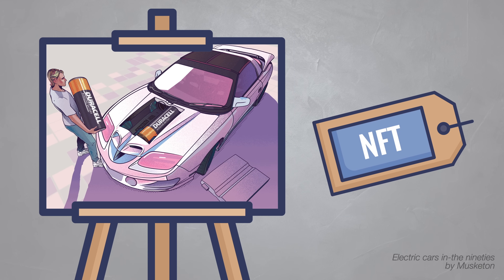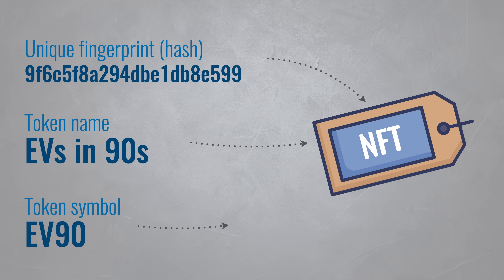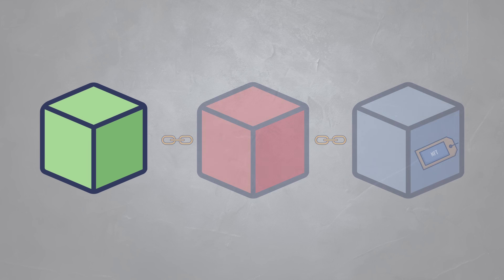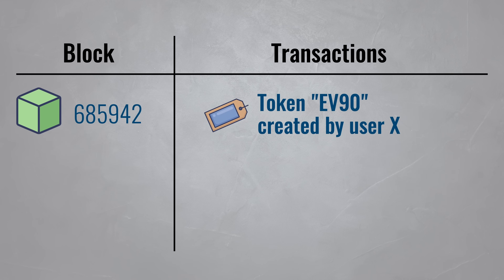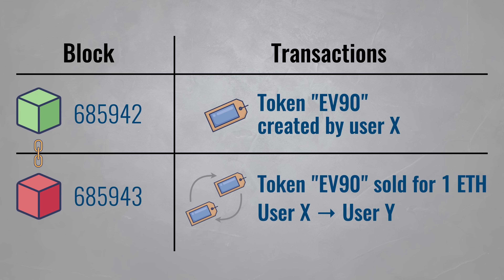Imagine that you made a piece of digital art — essentially a JPEG on your computer. You can create, or mint, an NFT out of this. The NFT that represents your art contains a bit of information about it, such as a unique fingerprint of the file, a token name, and a symbol. This token is then stored onto a blockchain, and you, the artist, become the owner. You can then sell that token by creating a transaction on the blockchain.